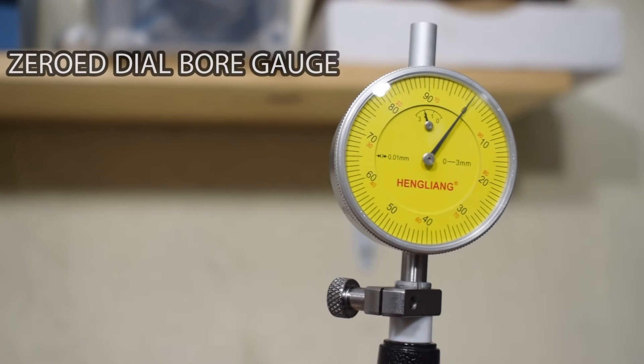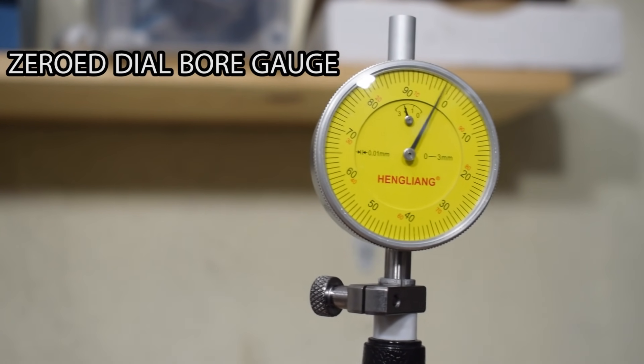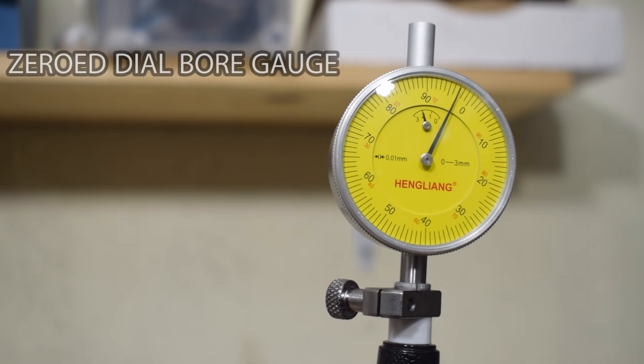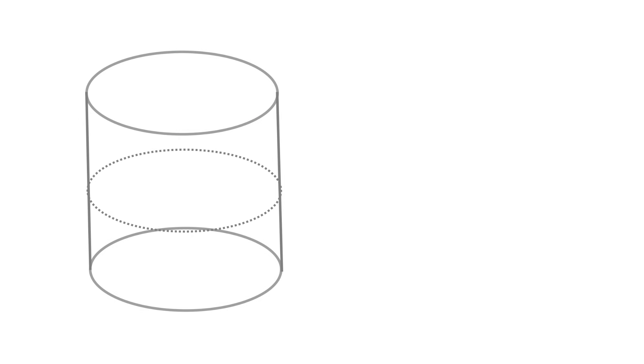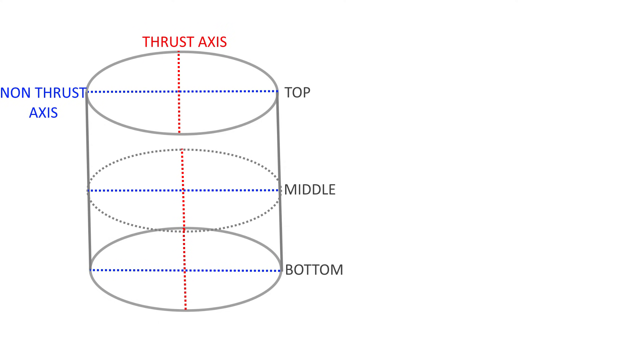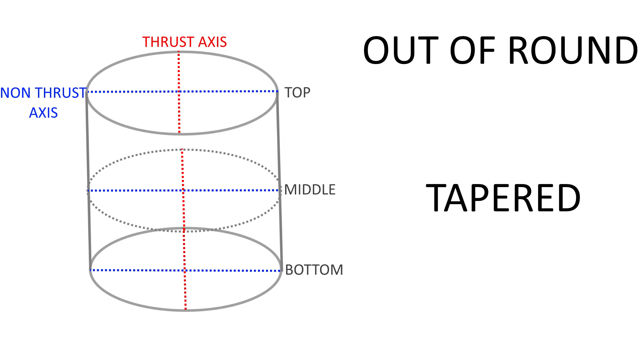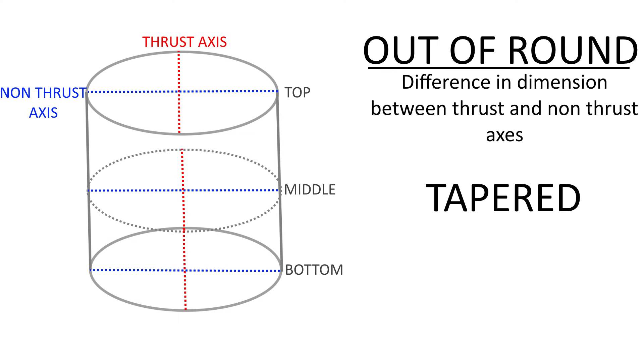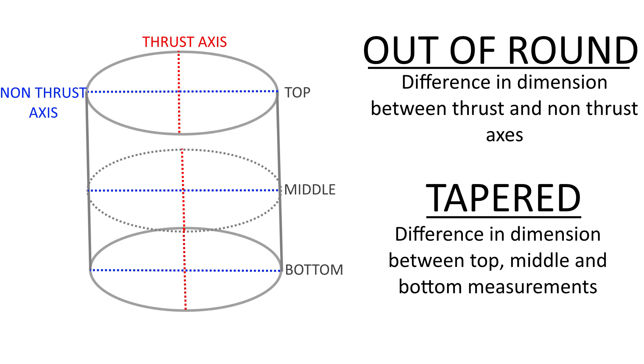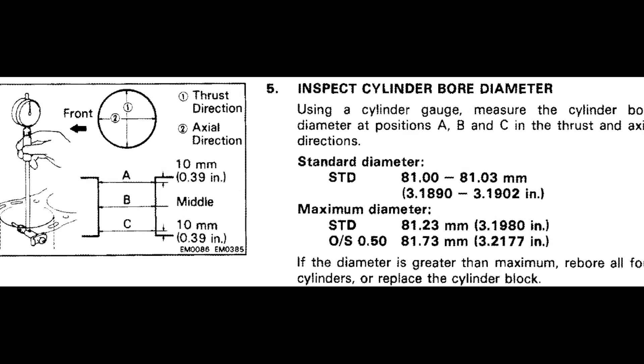Once you've zeroed the bore gauge we can proceed to the measuring and we'll be measuring at six different spots to get an accurate assessment of the condition of the bore. So here's our bore and we'll be measuring at the top, middle and bottom of both the thrust and non-thrust axis of the bore. We're looking for two things here. An out of round condition and or a tapered condition of the bores. An out of round condition will reveal itself as a difference between dimensions of the thrust and the non-thrust axis and a tapered condition will be present if there's a difference between dimensions at different bore depths. Our factory service manual tells us that the maximum allowable bore diameter is 81.23 mm. Anything beyond that calls for the cylinders to be re-bored.